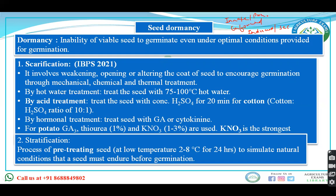Primary or innate dormancy is due to genetic factors or chemicals present in the seeds — it is also present in potato. Enforced dormancy is due to deeper placement of the seed in the soil. Induced or secondary dormancy is due to environmental factors like temperature or various climatic conditions. Germination occurs when seed moisture is above 40 to 60 percent.